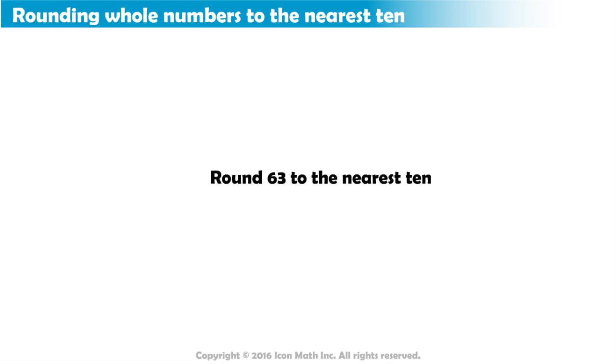Let us apply that to 63. The tens place has the digit 6, and the digit to its right, the digit in the ones place, is 3.